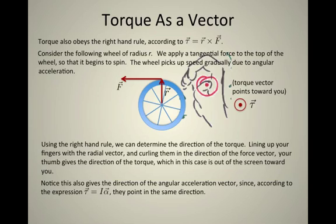This prediction also gives me the direction of the angular acceleration vector because torque is equal to I alpha. This is Newton's second law for rotations. The thing that you do, the torque, gives you a prediction of what will happen, the angular acceleration. And those two things point in the same direction.